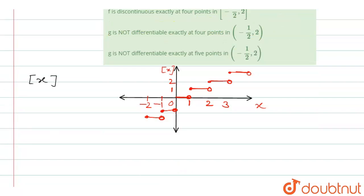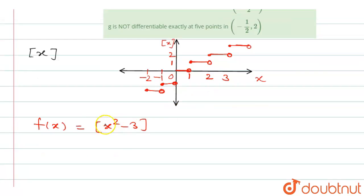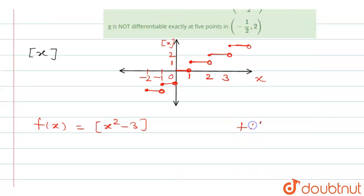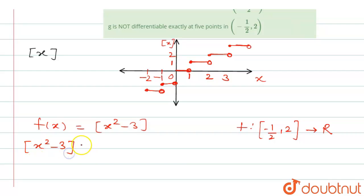Our given function is f(x) = ⌊x²-3⌋. This function is also discontinuous at all integer values of x²-3. The domain is x ∈ [-1/2, 2]. For case 1: ⌊x²-3⌋ = -3, meaning x²-3 is between -3 and -2, which simplifies to x² between 0 and 1, so x ∈ (-1, +1).